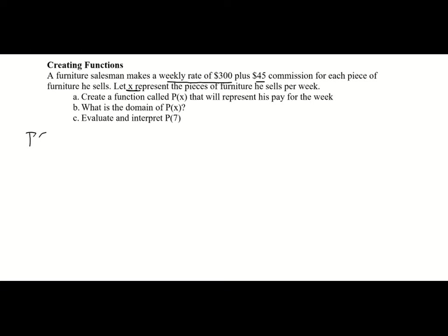For P of X, I always want to think about what is constant. Every week he's going to get a weekly rate of $300. To encourage sales, he also gets a commission, so we add on $45 for each piece of furniture he sells. If he sells X pieces, that's 45X. So P of X equals 300 plus 45X, representing his pay for the week.